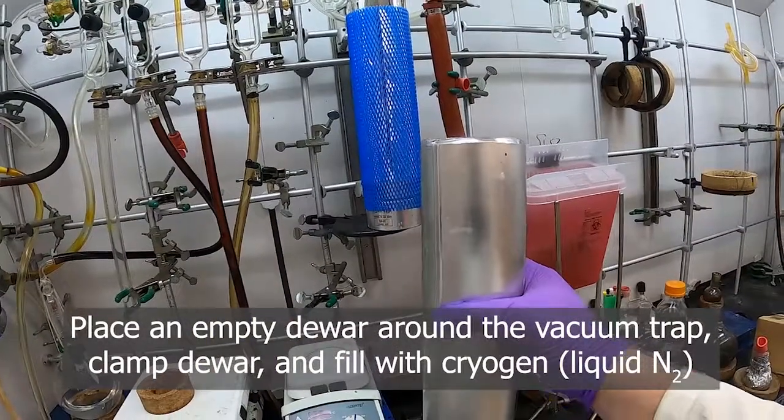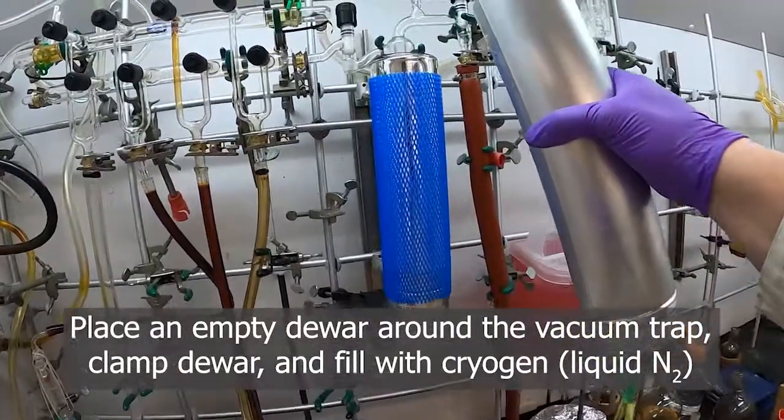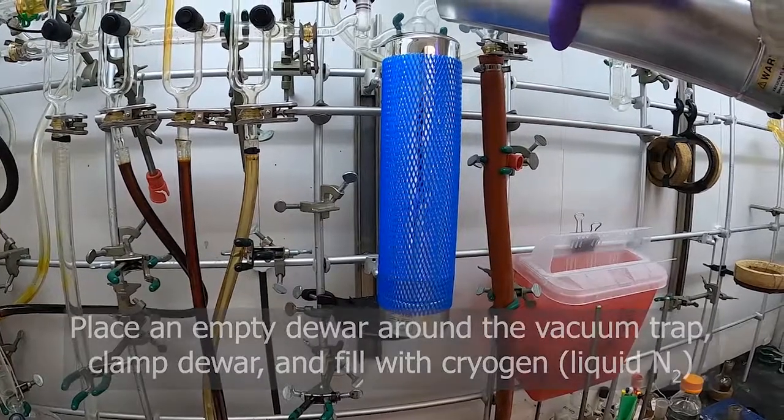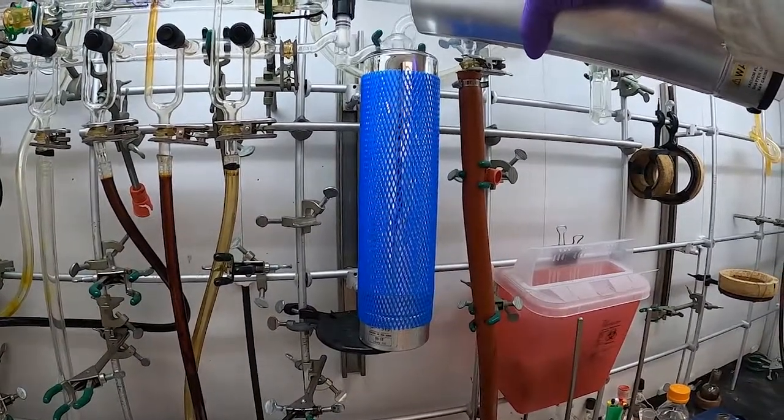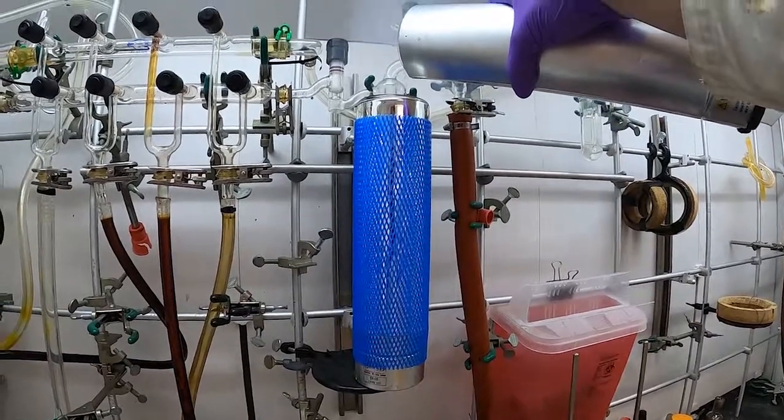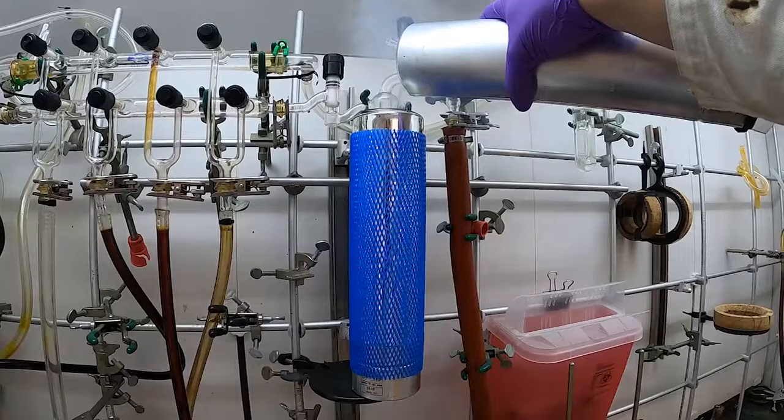And then this dewar which has nitrogen in it, pour into the other one to fill it. The nitrogen is to condense any solvent vapor that will be pulled through the vacuum line and keep them from damaging the pump.